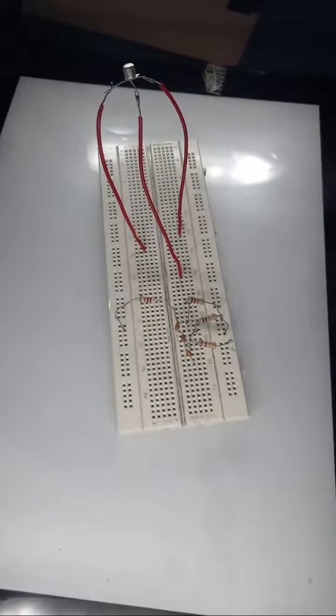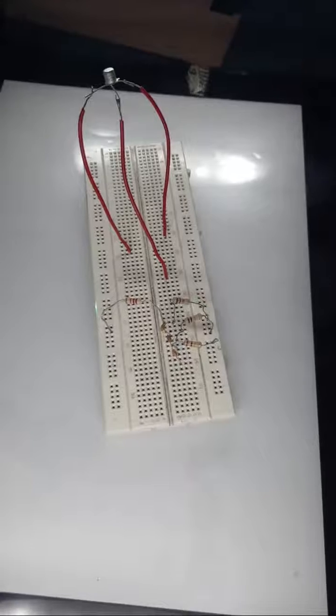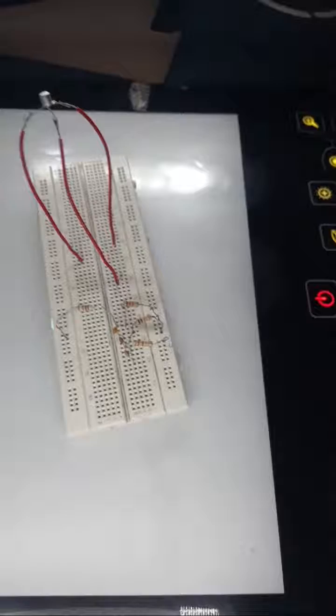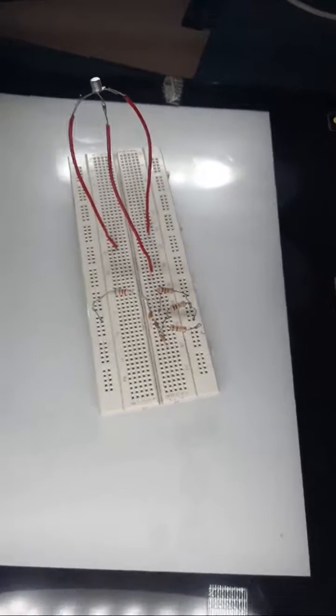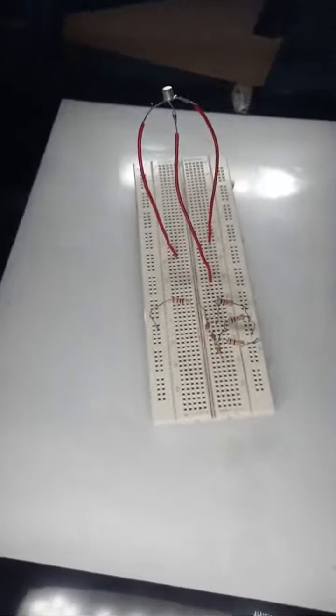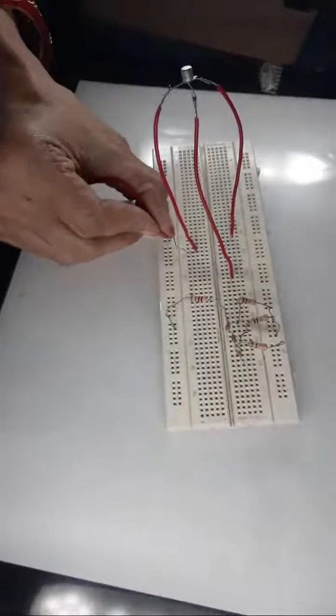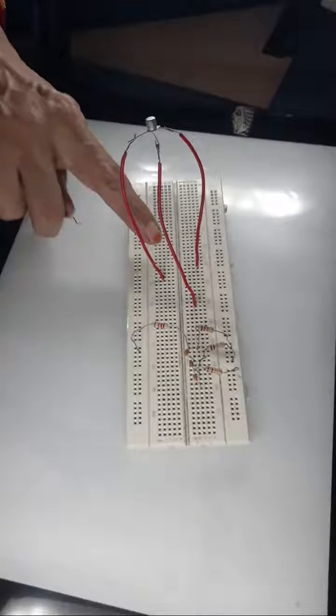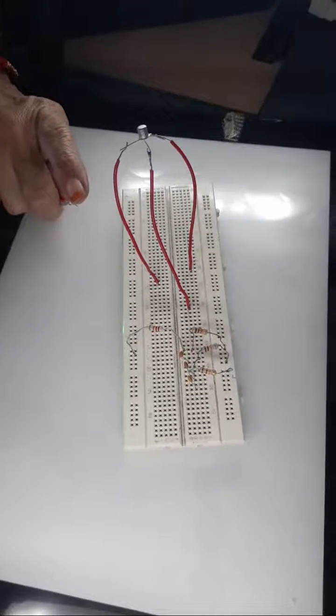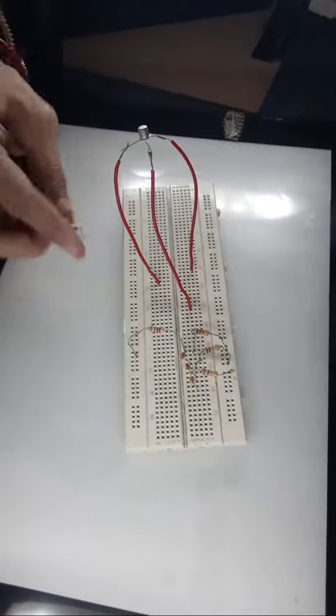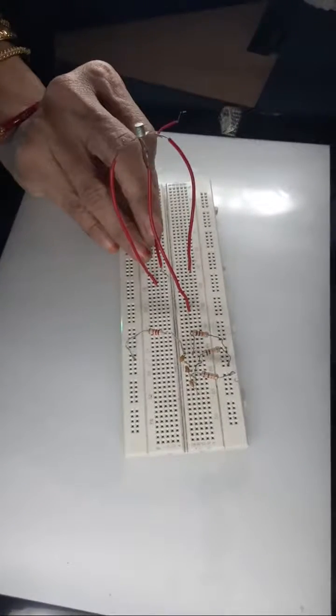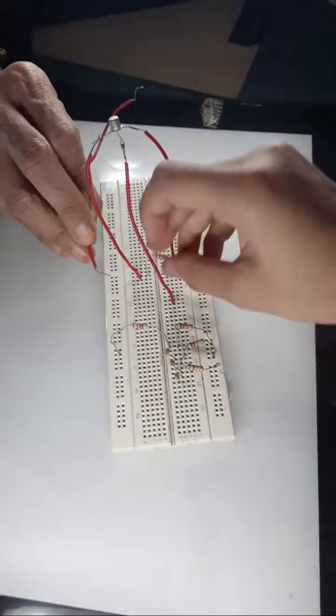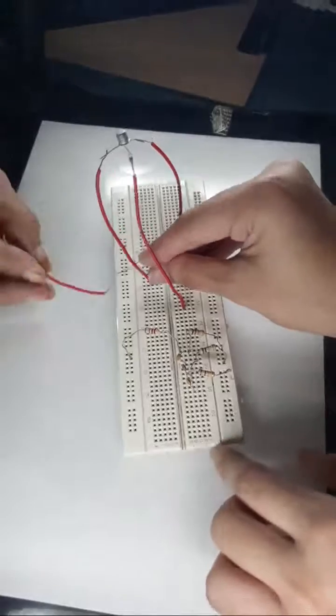Now what we do is, connect a collector resistor, you need a resistor at the collector also. So, take one more 10K resistor. Connect it from this end. Connect it here, on to the top. Push it towards this side.